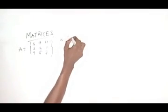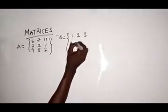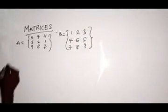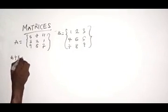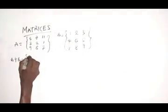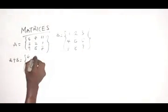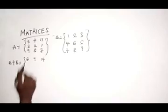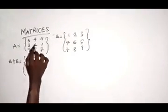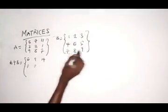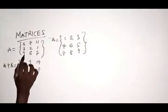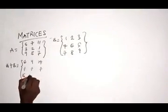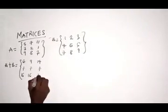My B is 1, 2, 3, 4, 5, 6, 7, 8, 9. Then my A plus B — the same thing applies: 5 plus 1 is 6, 7 plus 2 is 9, 11 plus 3 is 14. Then 3 plus 4 is 7, 2 plus 5 is 7, 1 plus 6 is 7. Then 9 plus 7 is 16, 8 plus 8 is 16, and 7 plus 9 is also 16.